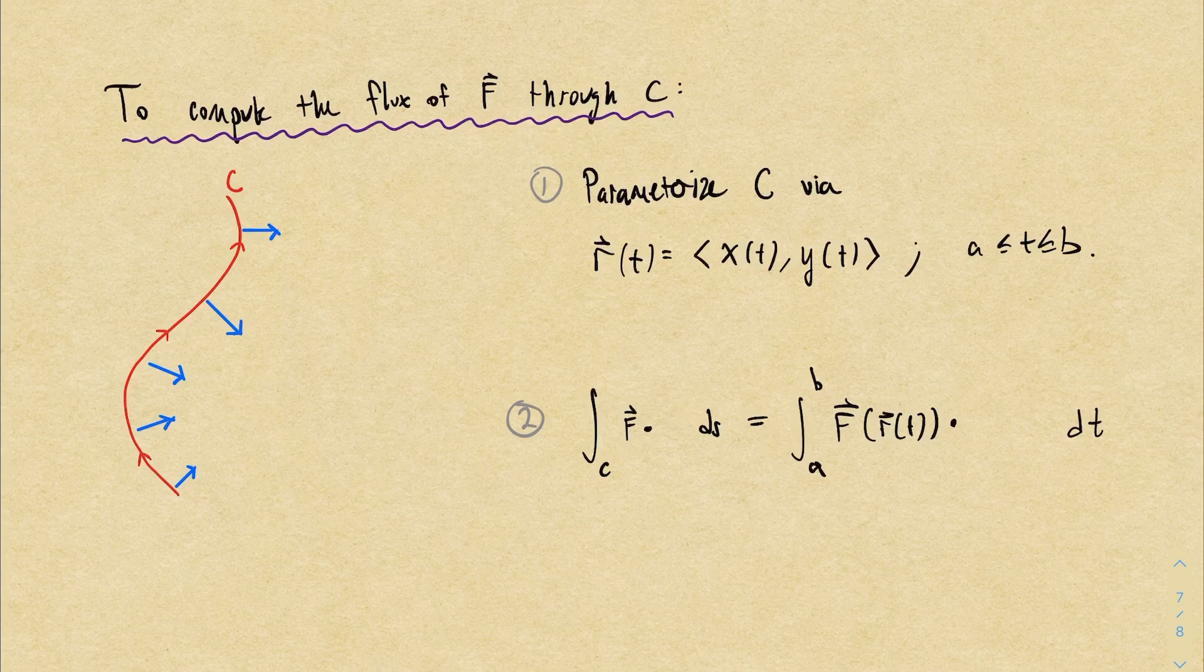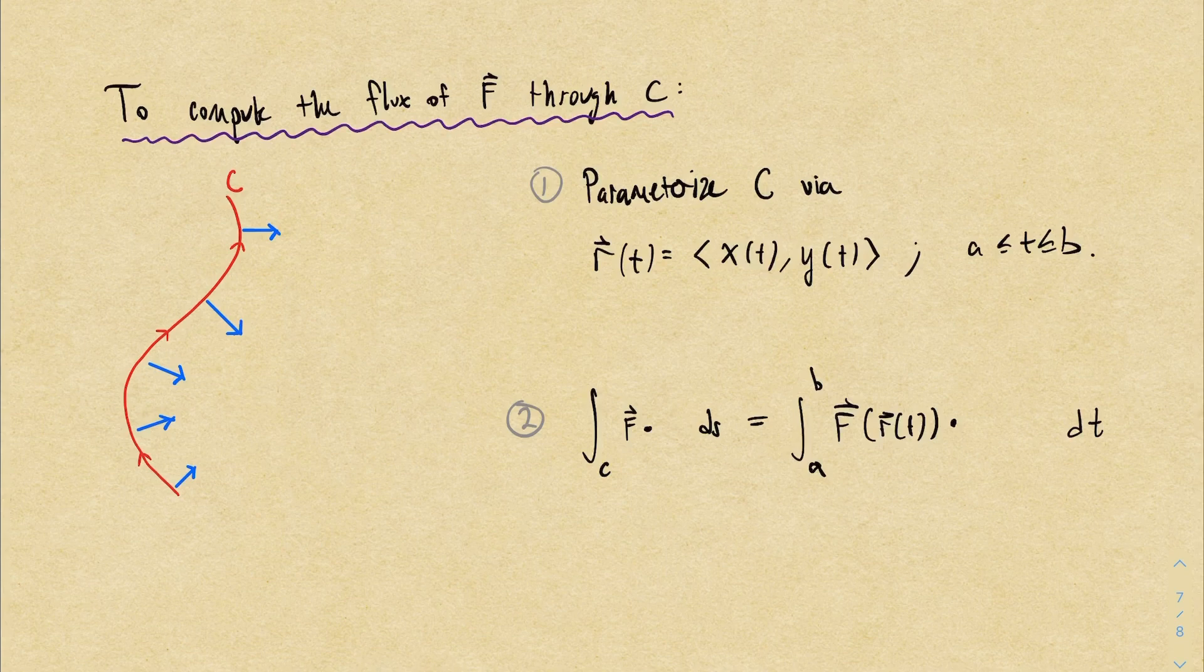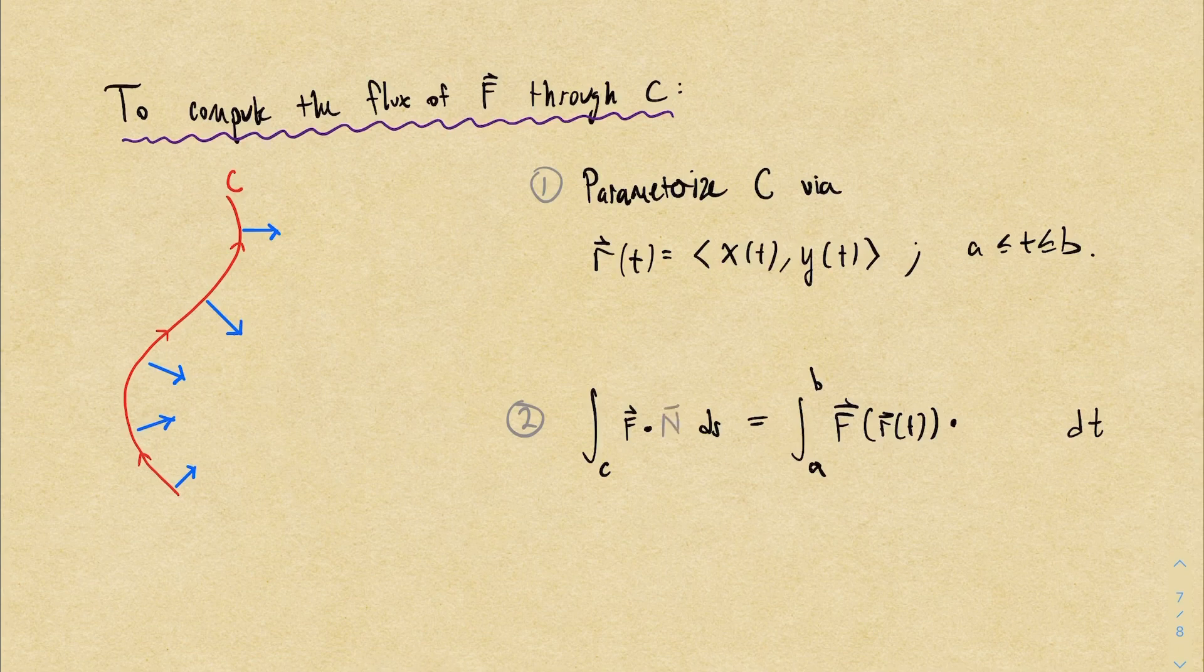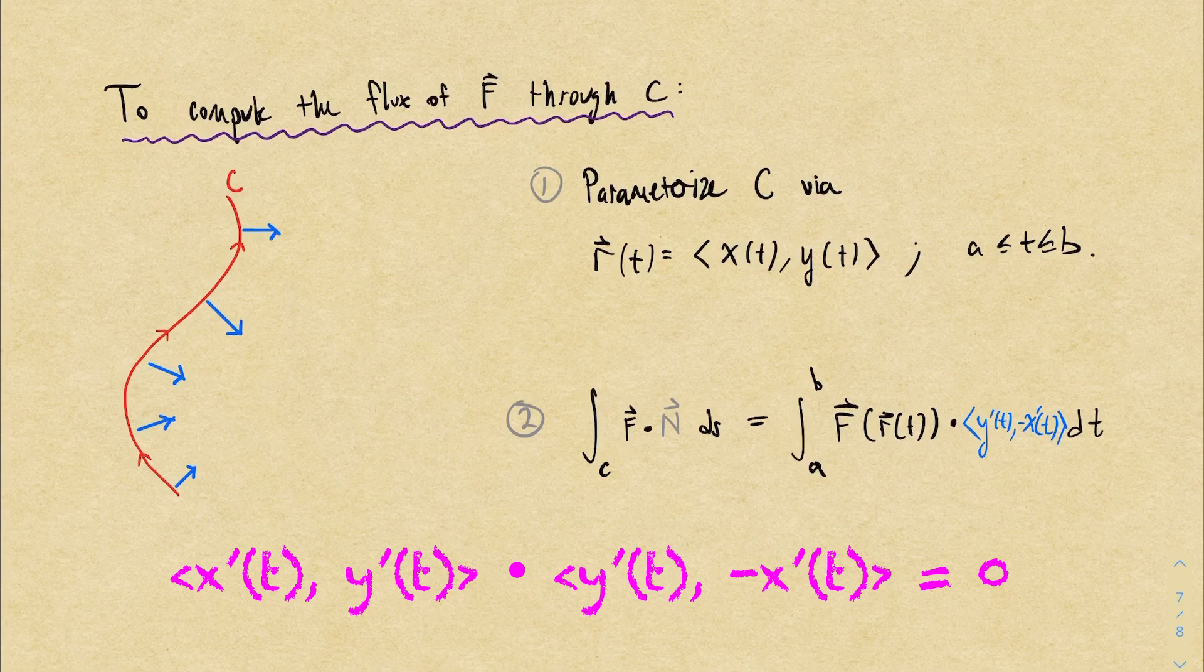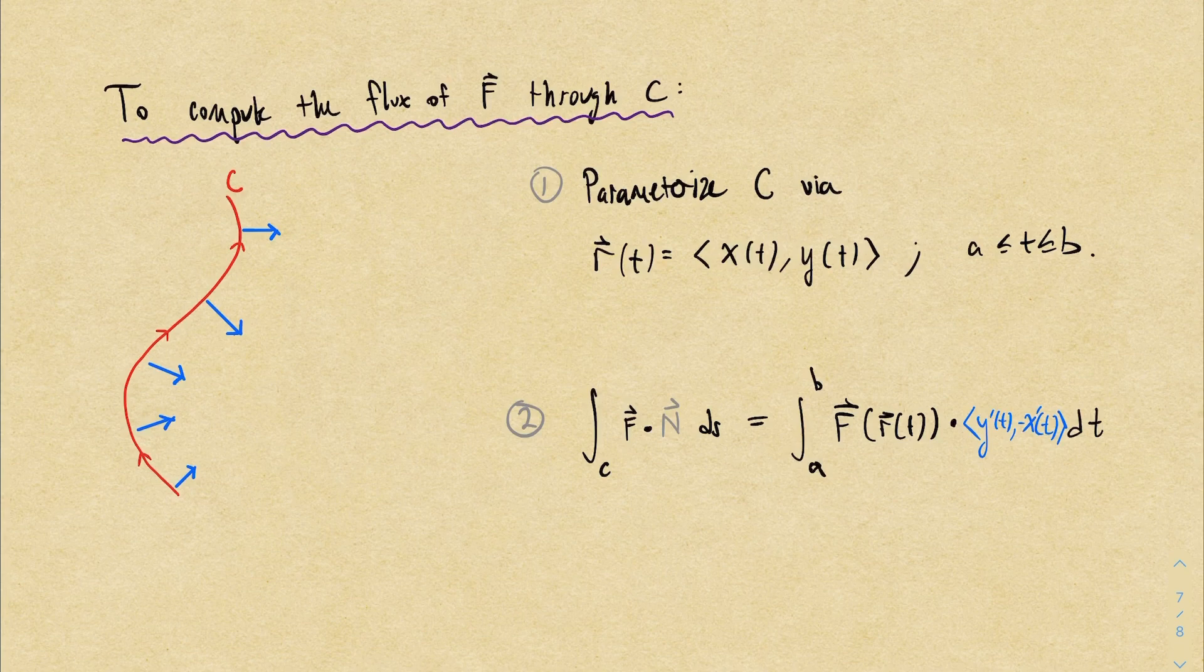How do we do this mathematically? Well, r prime is the vector (x'(t), y'(t)). So a vector orthogonal to that vector would be, for example, (y'(t), -x'(t)). You can just check that the dot product of this vector with the orange r prime vector is 0. Once you multiply this dot product out, you have a single variable calculus integral, and you can evaluate it.